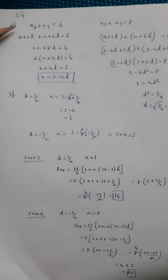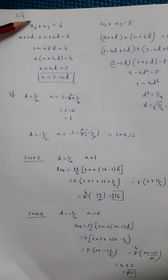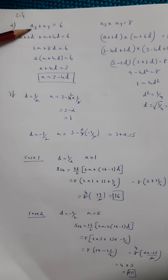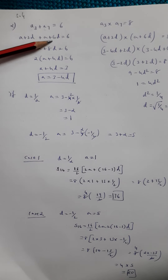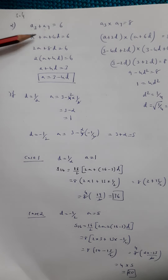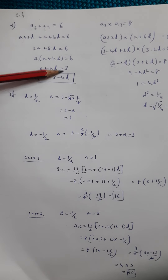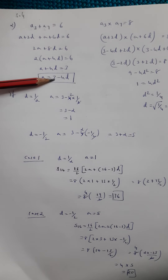Question 5.4 number 2. The sum of the third and seventh term is given as 6. The third term of the arithmetic progression will be a plus 2d and the seventh term will be a plus 6d. Adding these gives the linear equation 2a plus 8d equals 6, which simplifies by dividing by 2 to get a plus 4d equals 3. From here we can say a equals 3 minus 4d.